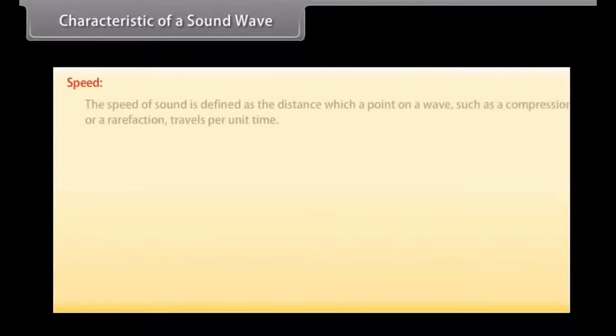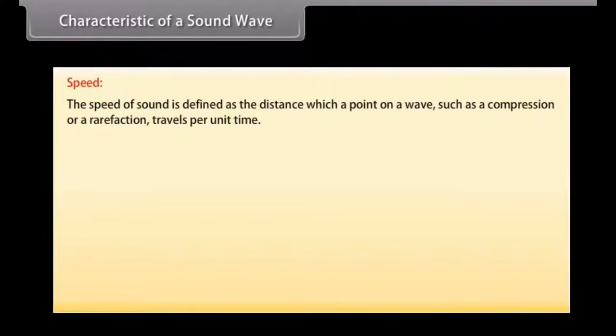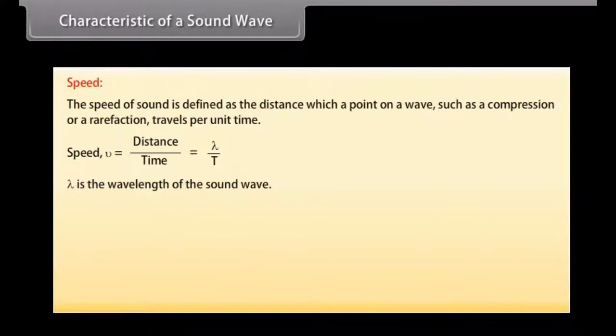Speed. The speed of sound is defined as the distance which a point on a wave such as a compression or a rarefaction travels per unit time. We know that speed v is equal to distance upon time which is equal to lambda upon T. Here lambda is the wavelength of the sound wave. It is the distance travelled by the sound wave in one time period of the wave. Thus v is equal to lambda into nu i.e. speed is equal to wavelength into frequency.